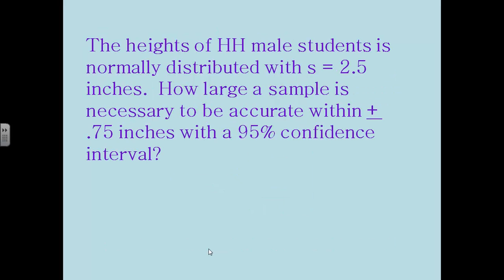So as an example, the heights of HH male students are normally distributed with a standard deviation of 2.5 inches. How large of a sample would be necessary in order to be accurate within plus or minus 0.75 inches with a 95 percent confidence interval? So 0.75 is our margin of error. So we're going to set up our formula. 1.96 is the z critical value that goes with the 95 percent confidence interval, so that's where that number came from. 2.5 inches divided by the square root of n. We don't know how big our sample needs to be so we're going to use the square root of n. And this is going to equal 0.75 because that's the margin of error that we want.